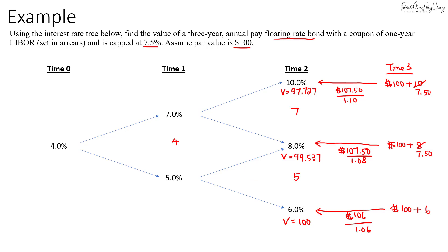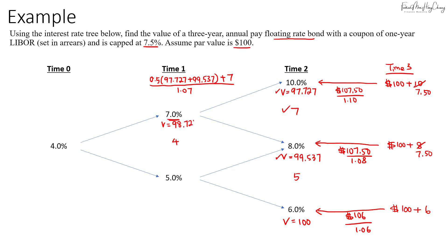Next, we discount these values back to time 1 using 50% weightage. The value at time 1 using the 7% rate is 0.5 × (97.727 + 99.537) plus the coupon of $7, all discounted at 7%, giving $98.721.